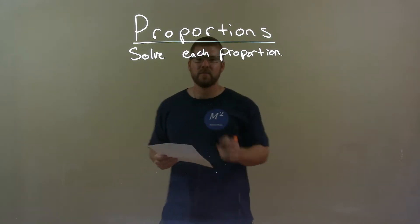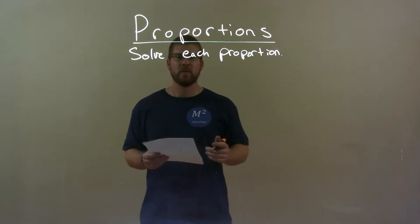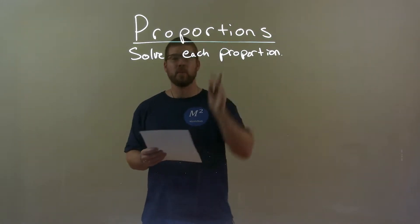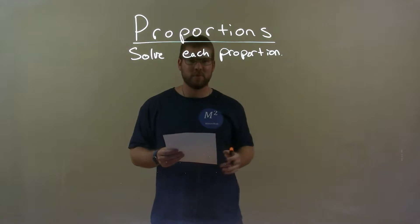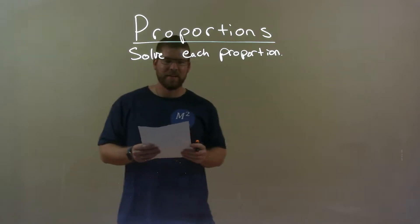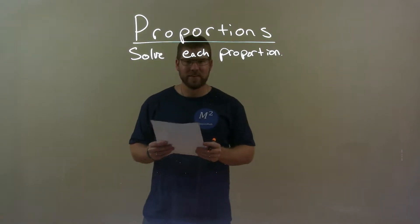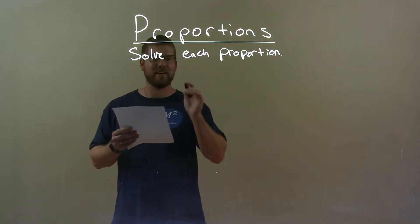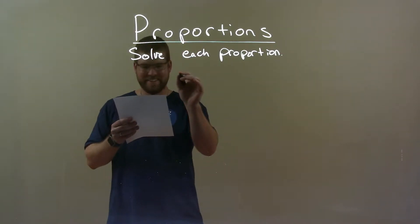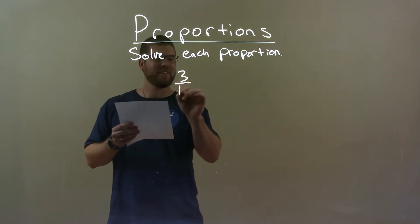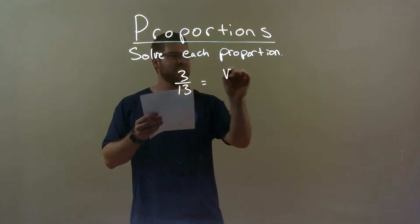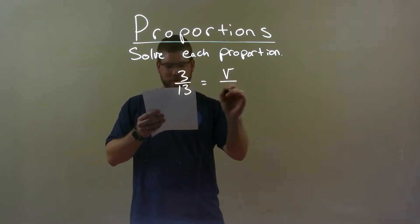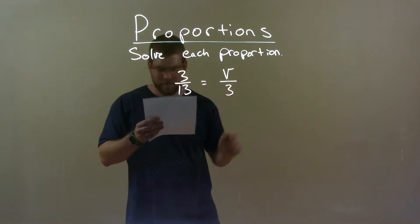Hi, I'm Sean Gann, and this is MinuteMath. Today we're learning about proportions. We're going to solve each proportion. If I was given this proportion, 3 over 13 equals v over 3.